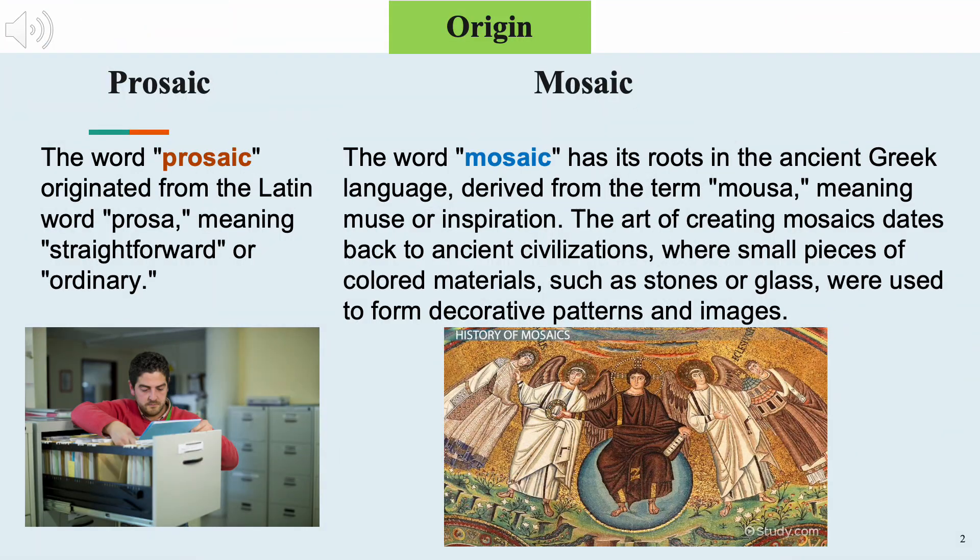The word prosaic originated from the Latin word prosa, meaning straightforward or ordinary. The word mosaic has its roots in the ancient Greek language, derived from the term musa, meaning muse or inspiration.